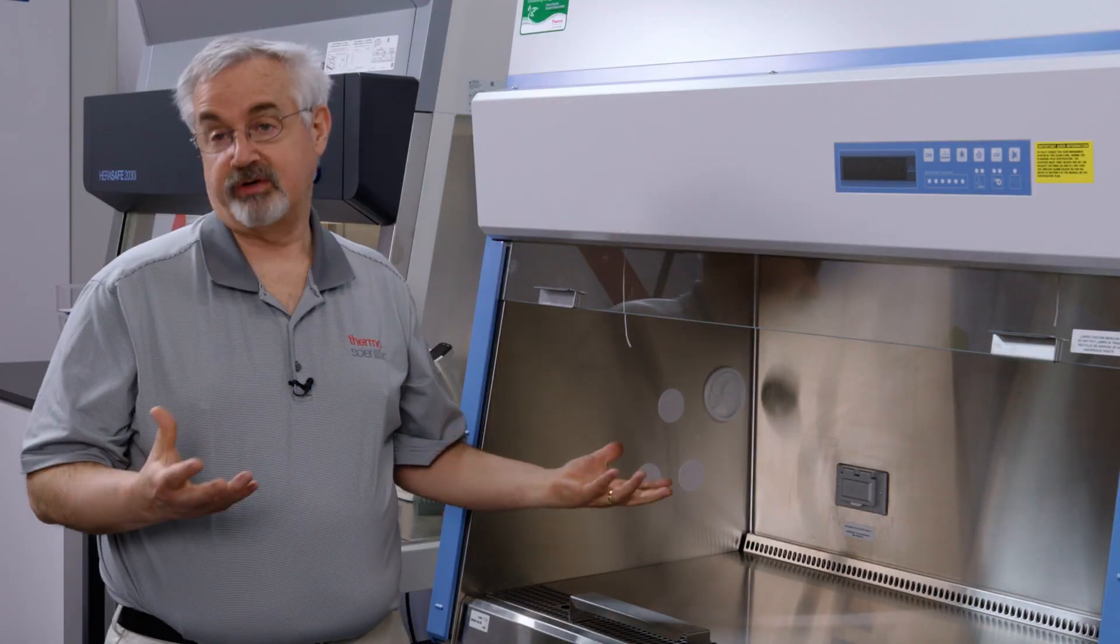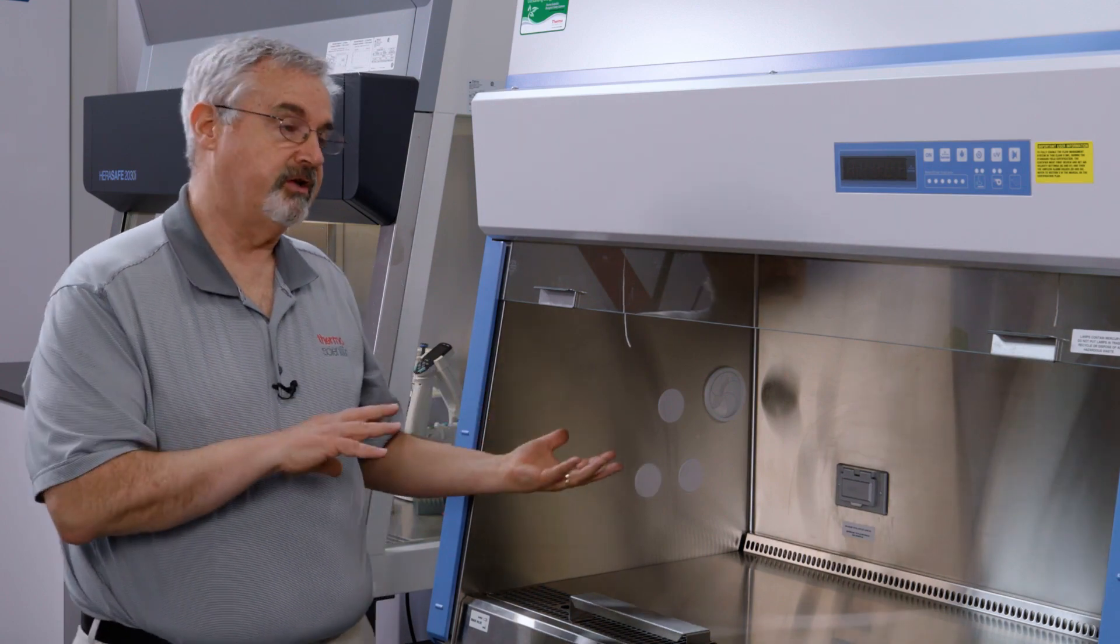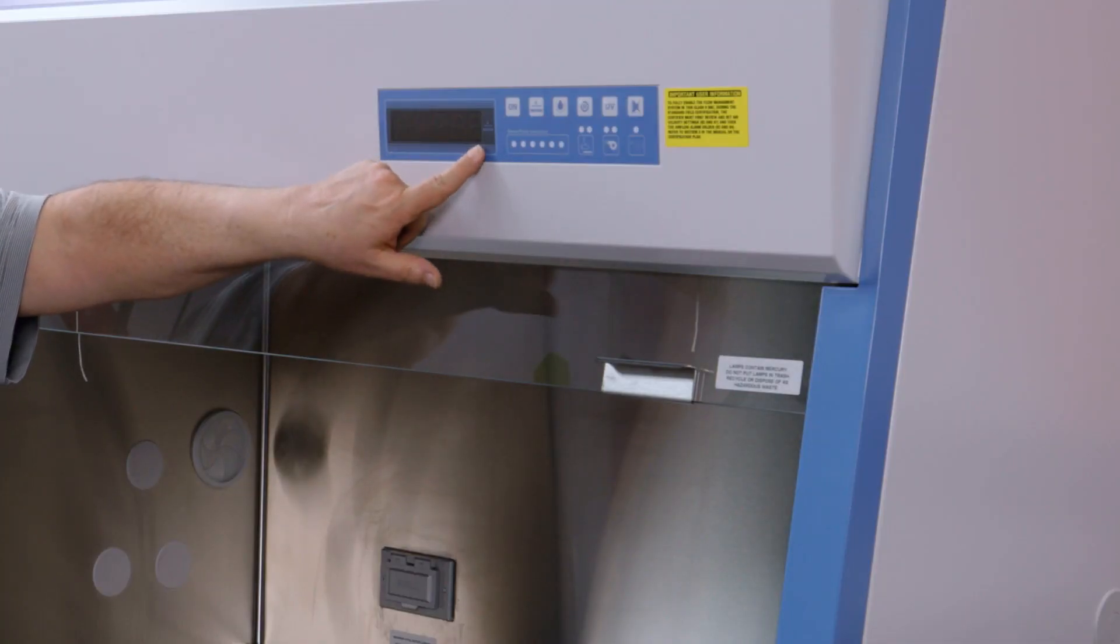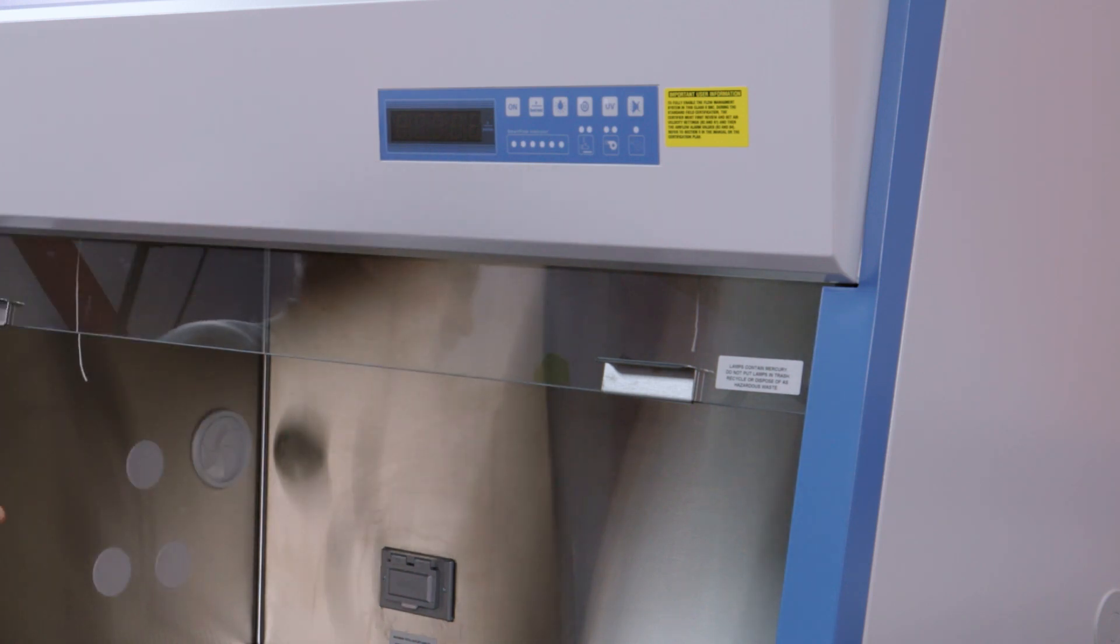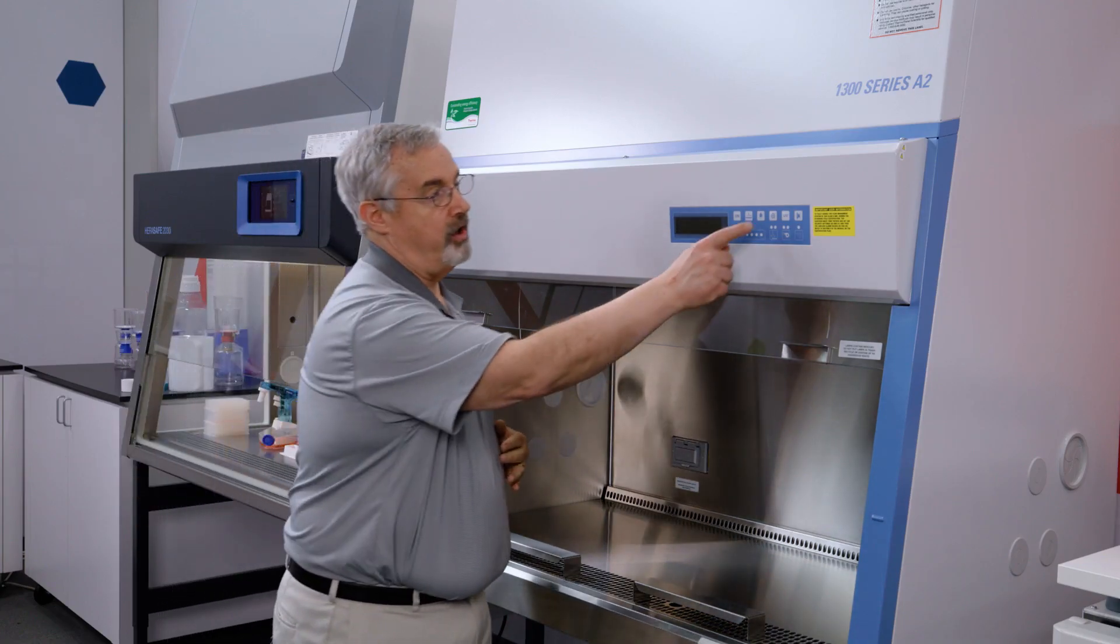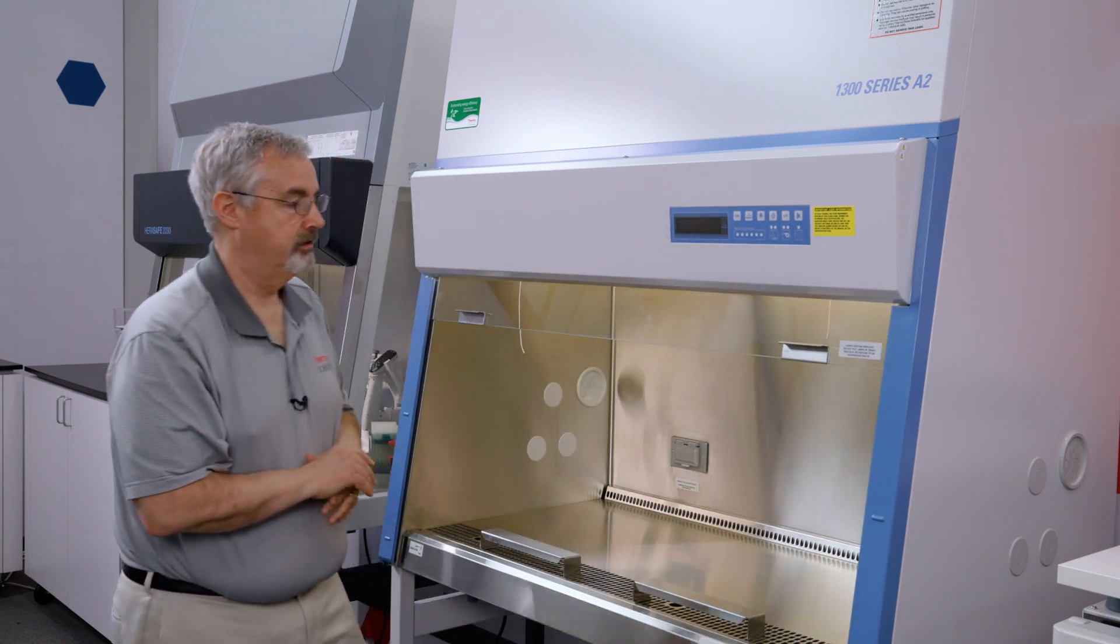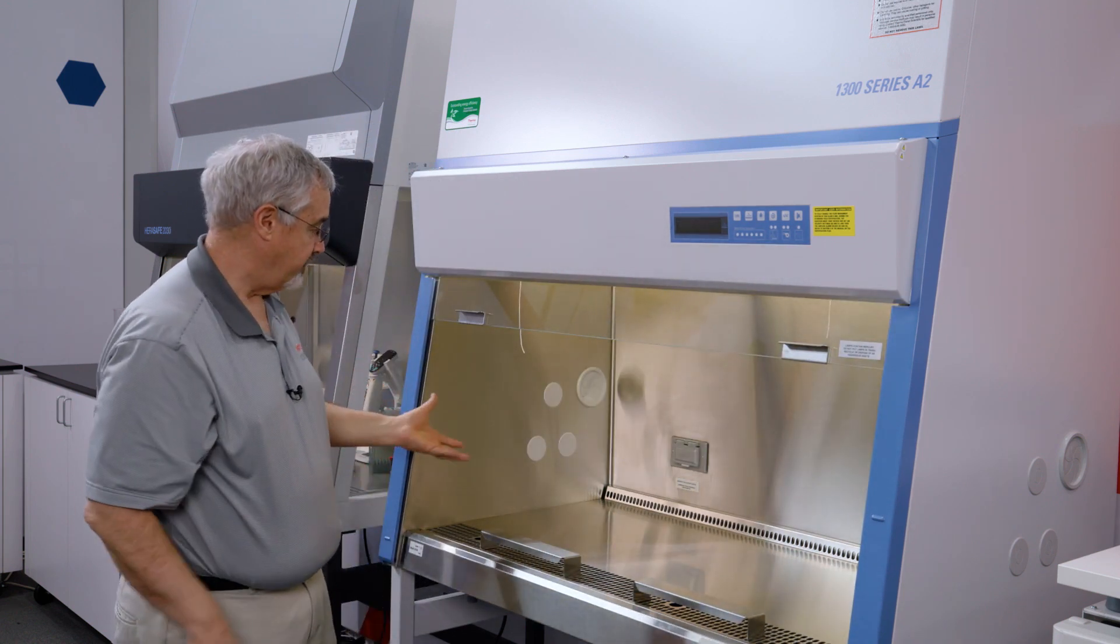So we've installed the drain valve. We've plugged in the unit and we can see the unit is powered because we have this green indicator showing that there's power going to the unit. We're going to turn on the work light and now we can see the inside of the cabinet.